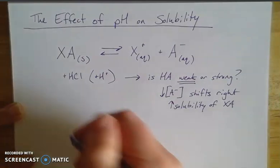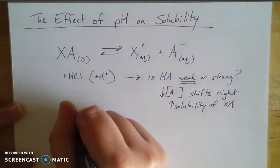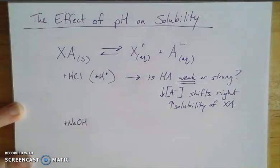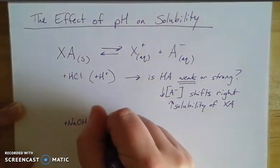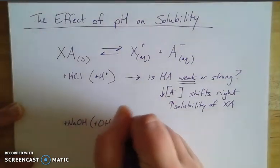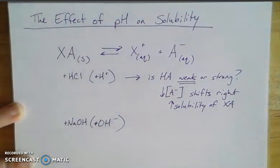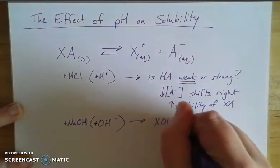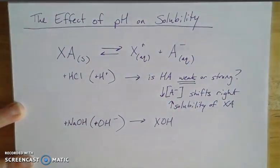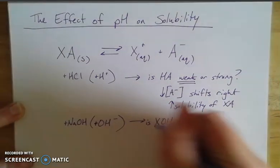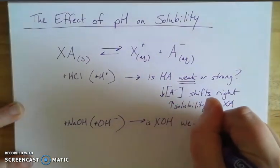Now we can do the same kind of thought process with a strong base. So let's take sodium hydroxide, which essentially means that we're adding hydroxide ions. So the real question then that we're asking is: is X hydroxide, whatever that metal hydroxide, is it going to be a weak or a strong base?